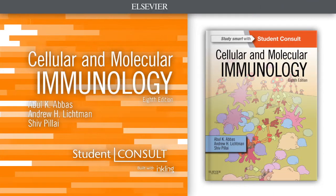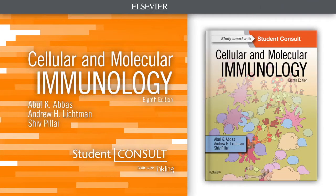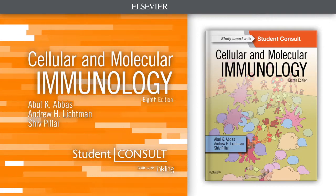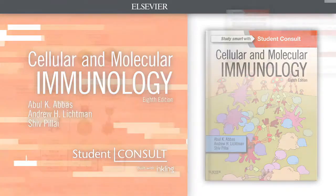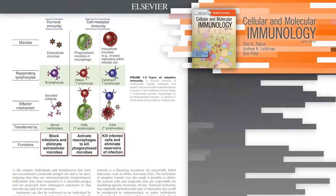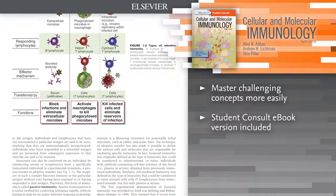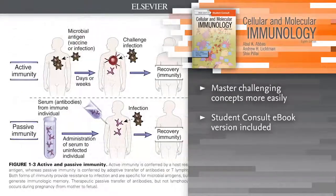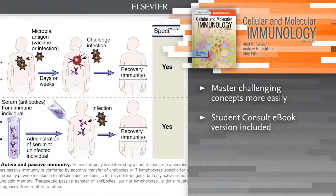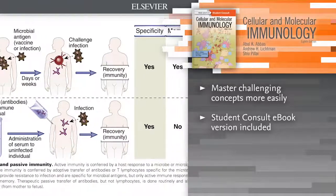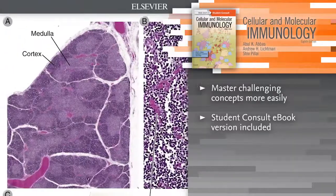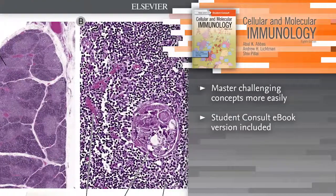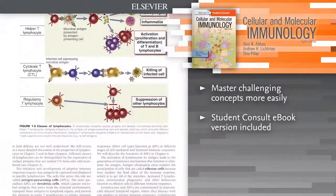Introducing Cellular and Molecular Immunology, 8th Edition. Popular for its highly visual, straightforward approach, this thoroughly revised text delivers an accessible yet thorough understanding of this active and fast-changing field. Key updates cover the latest developments in antigen receptors and signal transduction in immune cells,